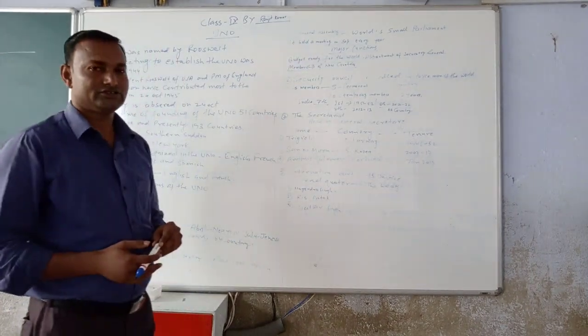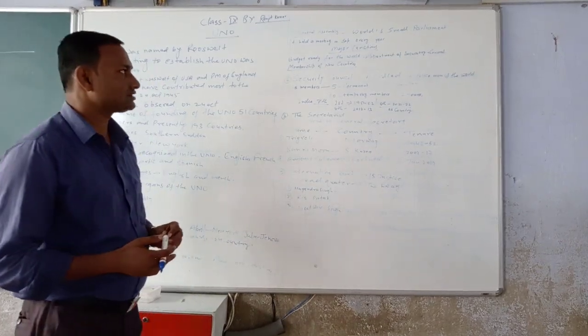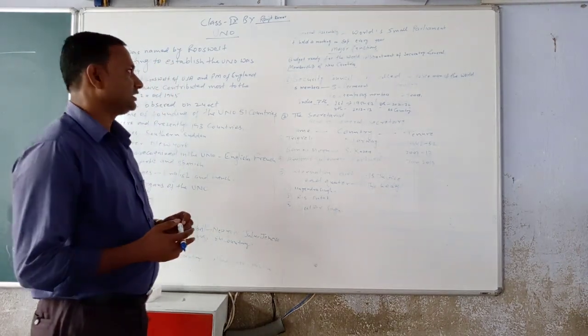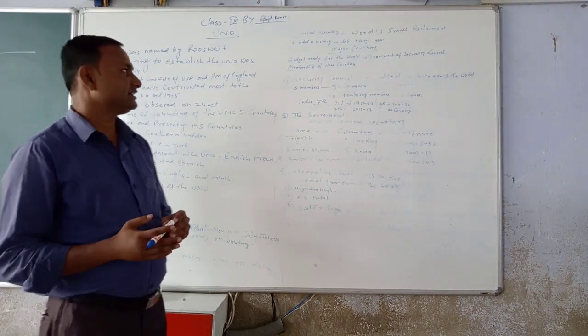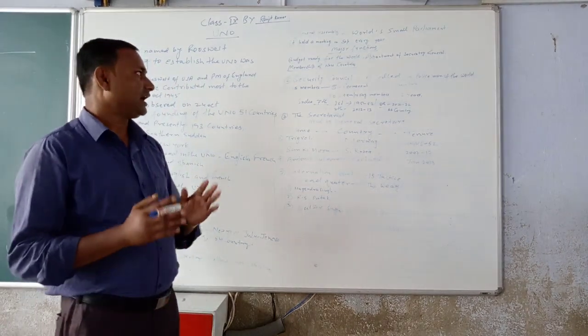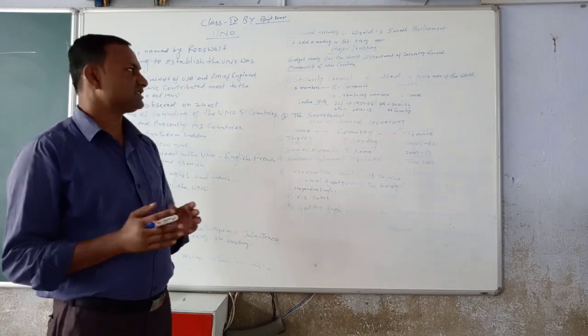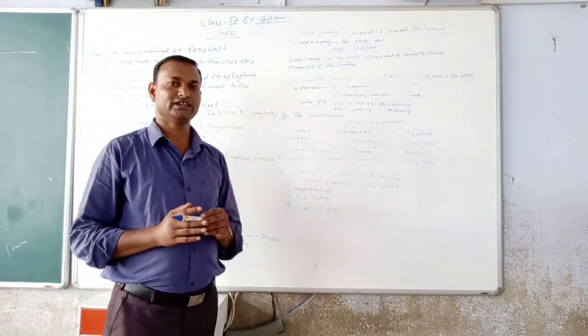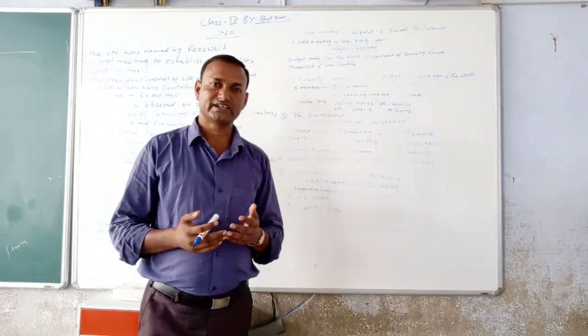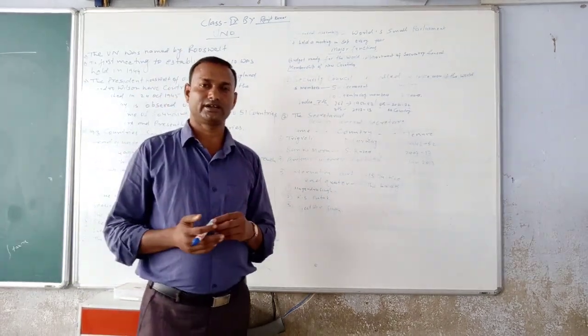First, General Assembly. General Assembly, we are calling it the world's small Parliament. It holds a meeting in September every year. And the Major Functions, the budget ready for the world, and the appointment of the Secretary General, and admission of new country members.